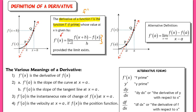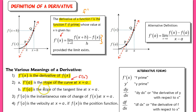The derivative has various meanings. f prime of x is the derivative of f(x). f prime of a is the slope of the curve at x equals a, and it's the slope of the tangent line at x equals a — we're using the same exact limit. f prime of a is also the instantaneous rate of change of f(x) at x equals a, and it's the velocity at x equals a, provided that f(x) is the position function.